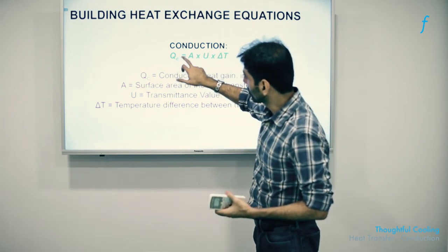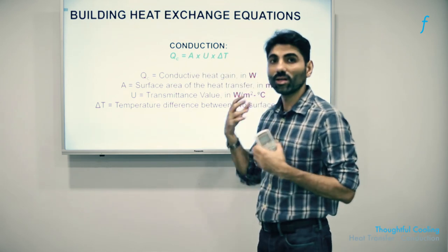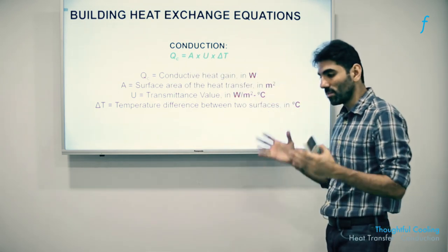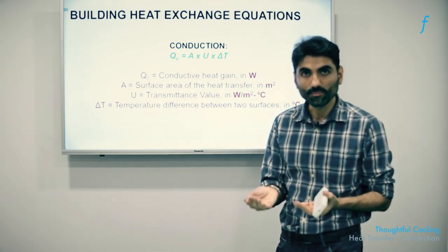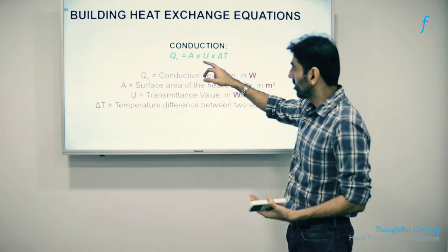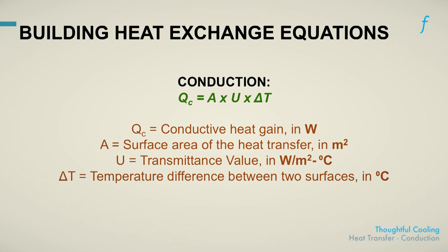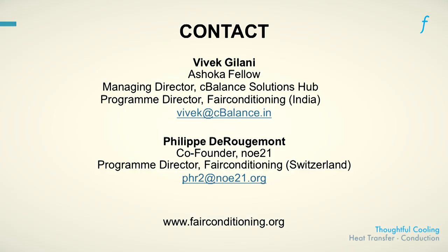Therefore, to reduce Q — the amount of heat gain — one might reduce the area available for heat transfer, meaning buildings with as little exposure to the sun as possible. For the same built-up or carpet area, one can reduce the U value or the heat transfer coefficient, or reduce the temperature of outside conditions so that the amount of heat coming into the building is reduced. If you have other questions, please do not hesitate to get in touch on our email addresses or through our portal, fairconditioning.org. Thank you.